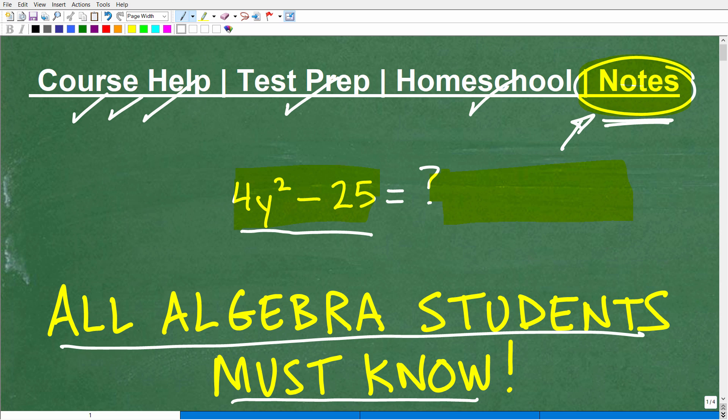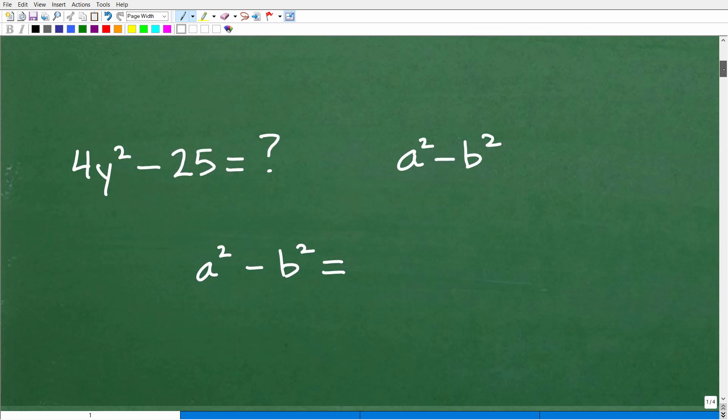All right. So let's get into this problem. Again, if you know how to factor this, just put your answer into the comment section. But let's get going here. Okay. So what are we talking about? Well, we're talking about this right here. So what is this? Well, this is something squared. And this is something else squared. And this little subtraction thing here is called the difference. So this is a difference of something squared and something else squared. Well, we call this the difference of two squares.